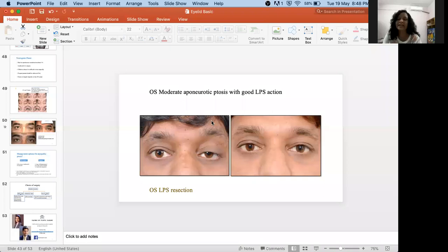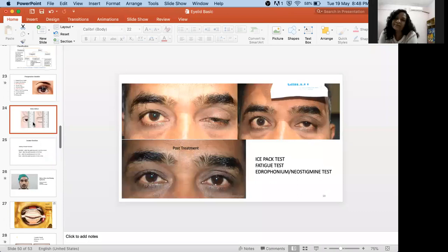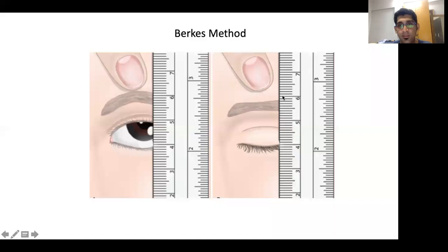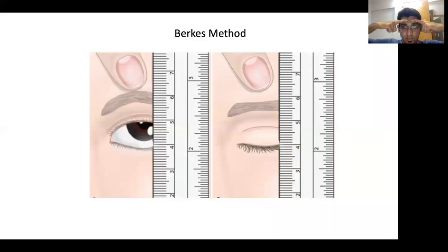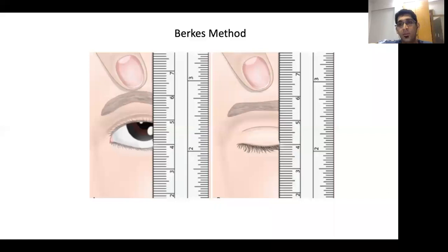Q&A: Where to place the thumb when occluding frontalis during levator function assessment? The thumb is placed just above the eyebrow — not applying excessive force — to negate frontalis action without negating the measurement. Two methods: (1) an assistant stands behind the patient and occludes both frontalis muscles while the examiner sits in front with the scale; (2) single-examiner method where one finger negates the frontalis and the patient is asked to look up and down. For the fatigue test: patient looks up at a fixed target for at least two minutes; in myasthenia gravis the eyelid will progressively droop as acetylcholine is exhausted.